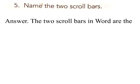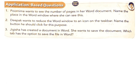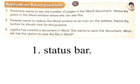Five: name the two scroll bars. Answer: the two scroll bars in Word are the vertical scroll bar and the horizontal scroll bar. Application based questions. One: Panama wants to see the number of pages in her Word document. Name the place in the Word window where she can see this. Answer: status bar.